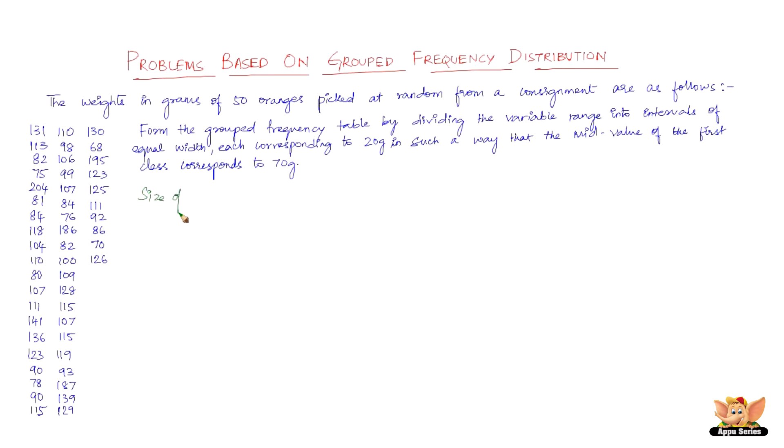The question is clear. We need to divide the variable range into intervals of equal width, each corresponding to 20 grams, with the mid-value of the first class as 70 grams. So the class size h is 20, and the mid-value a of the first class is 70.